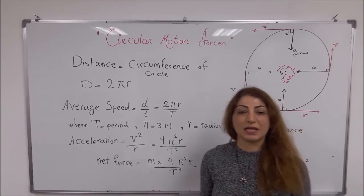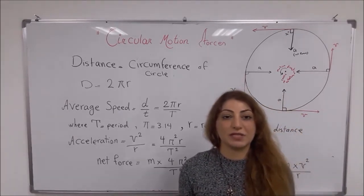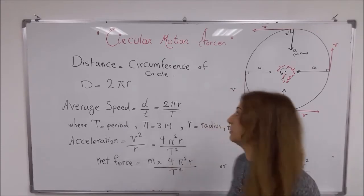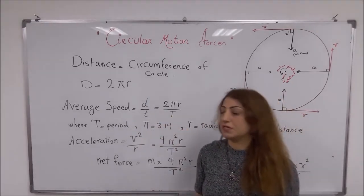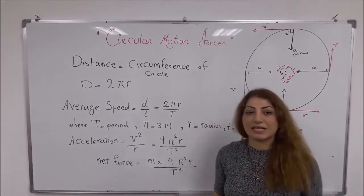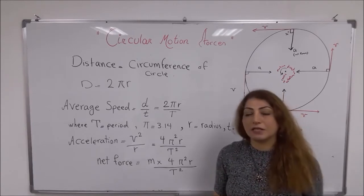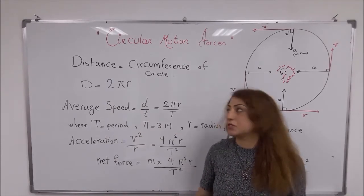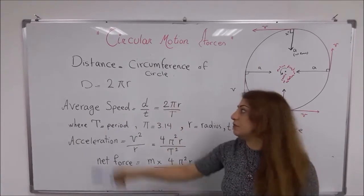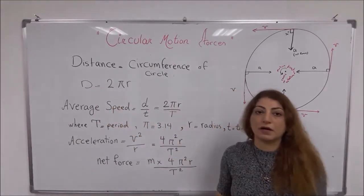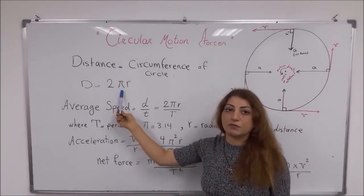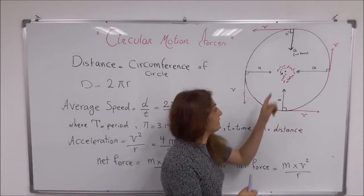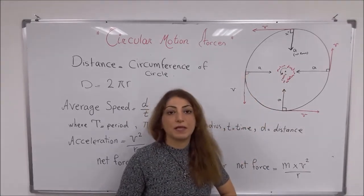Let's see what equations are needed to calculate the net force on a circular path, and also to calculate the average speed and acceleration of objects. The first thing you need to know is about distance. The distance covered by an object in circular motion is equal to the circumference of the circle, which equals 2πr — that is, 2 times 3.14 times r, where r is the radius of the circle from the center to one side.